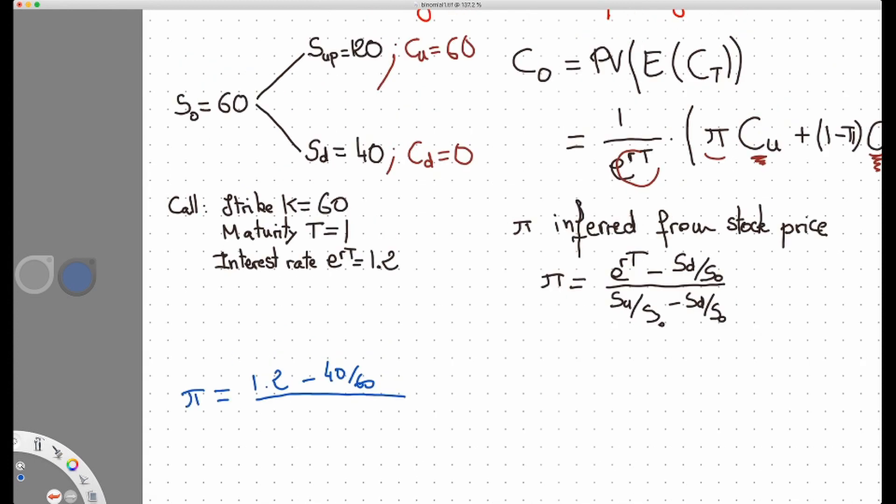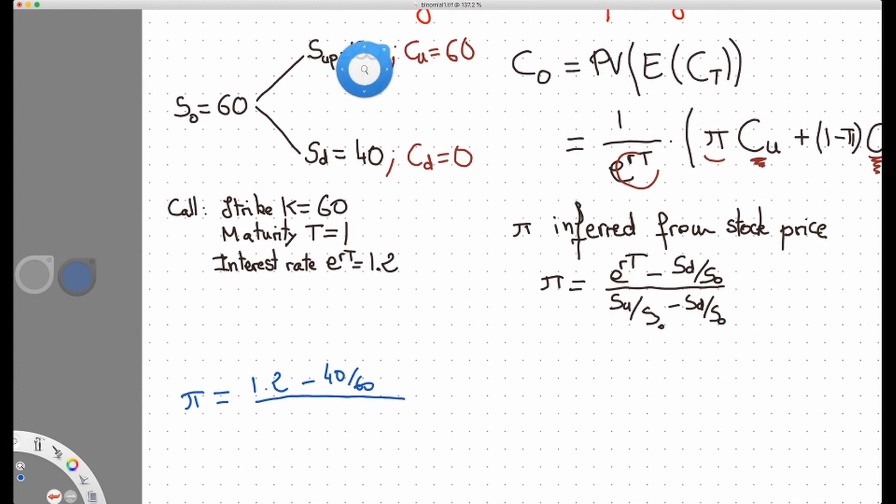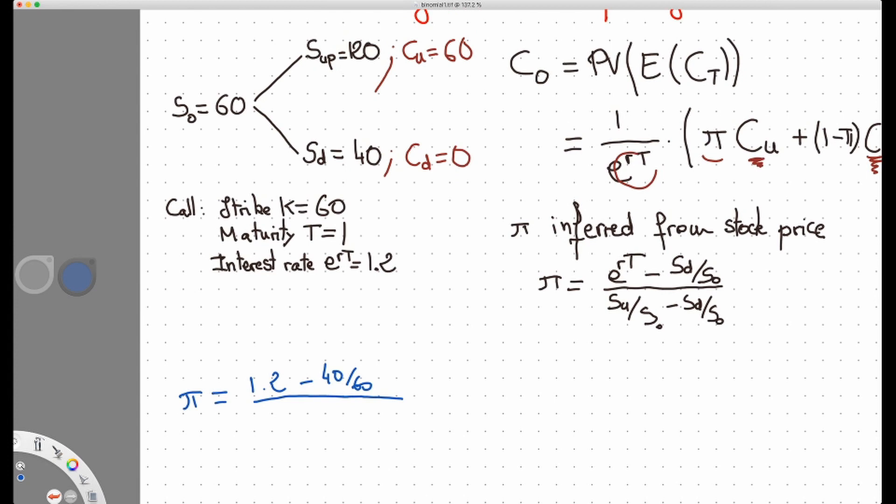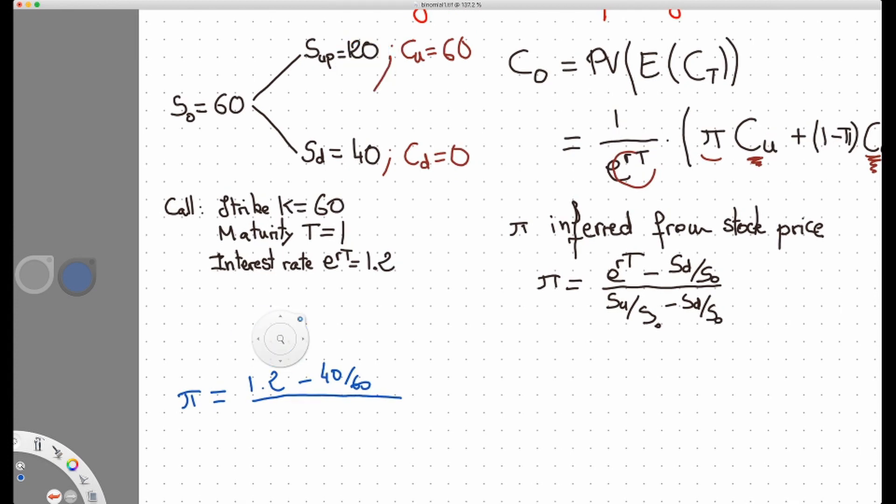Divided by S up over S0. Let's go back to see our tree. S up is equal to 120, so that's 120 here over S0 minus 40, S down, over 60. You can simplify this and actually find a fairly simple answer, which is 0.4 or 40%.